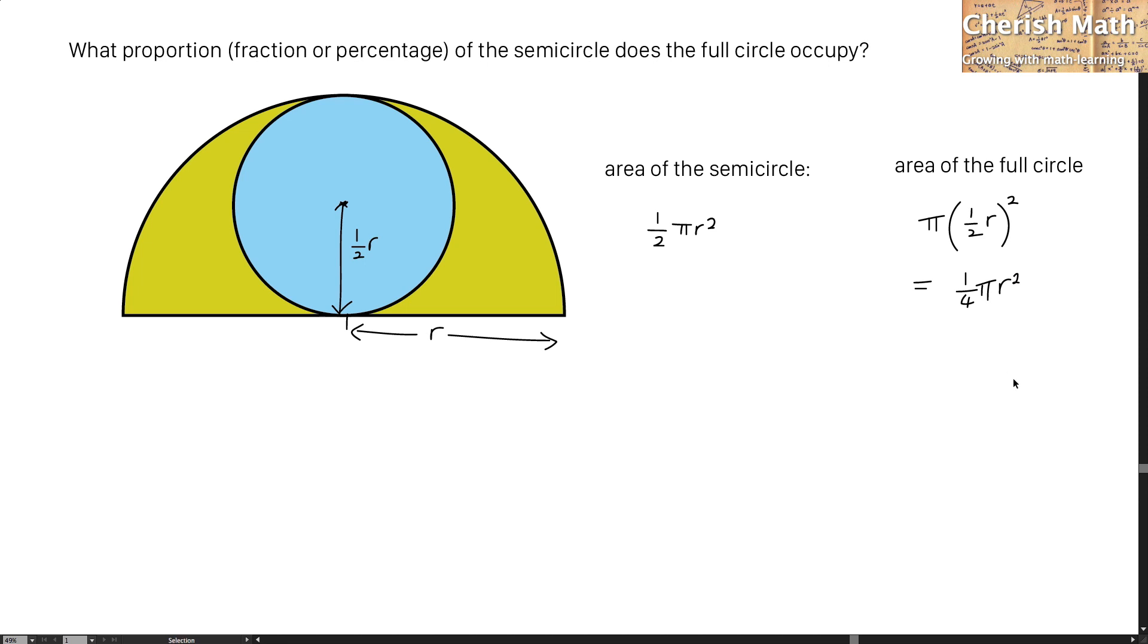I'm going to solve the problem by using the area of the full circle divided by the area of the semicircle. And that turns 1 quarter pi r squared divided by 1 half of the pi r squared.